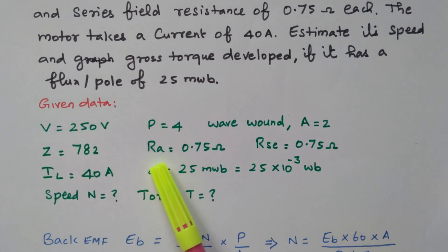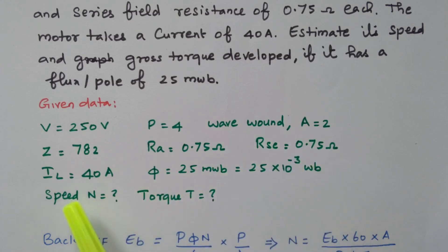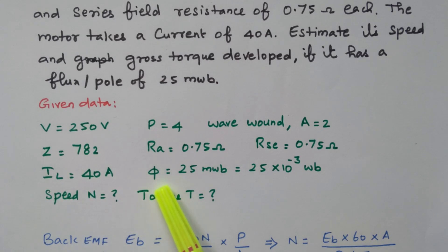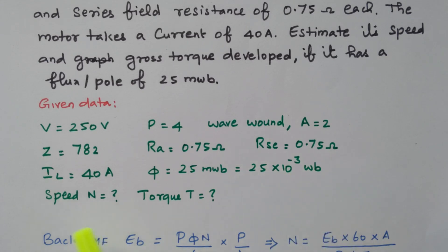The armature resistance RA is 0.75 ohm. The series field resistance RSE is also 0.75 ohm — both are equal. The load current is 40 ampere. The flux is given as 25 milliweber, that is 25 × 10⁻³ weber. We need to find the speed of the motor as well as the gross torque developed.